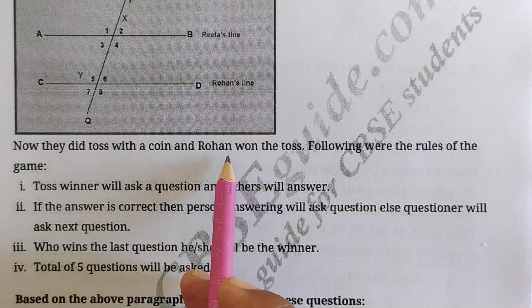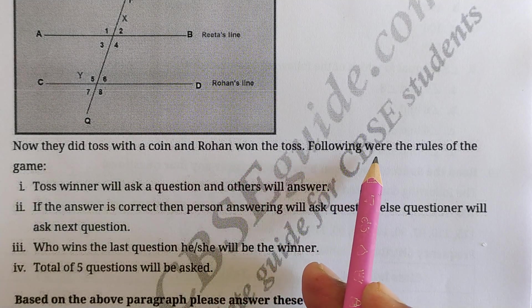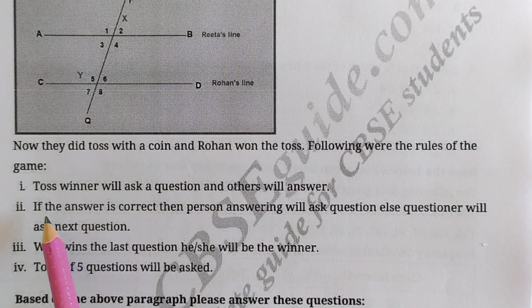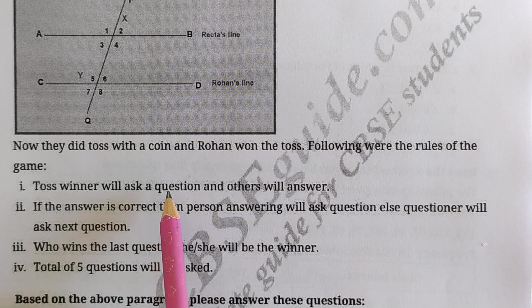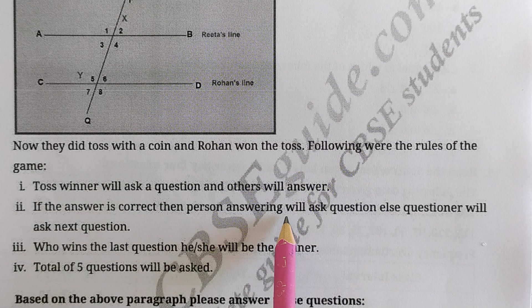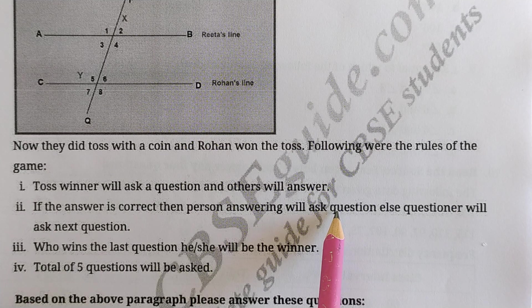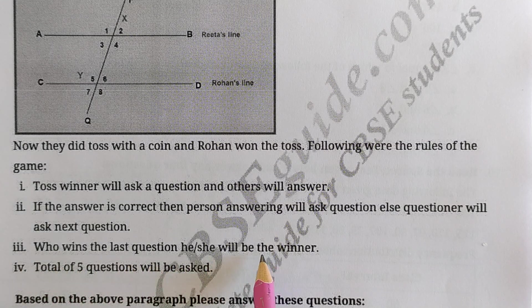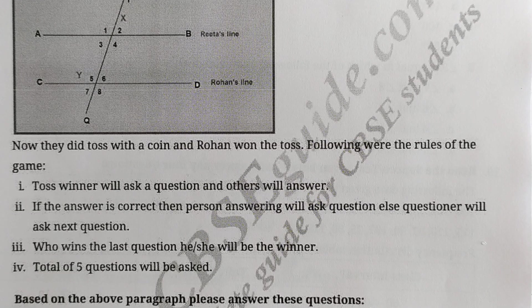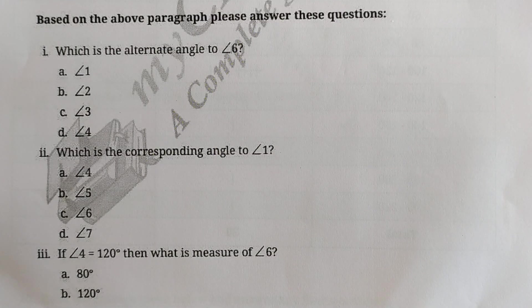They did a toss with a coin and Rohan won the toss. Following the rules of the game: rule one — the toss winner will ask a question and the other will answer. If the answer is correct, the person who answered will ask the next question. If the answer is incorrect, the questioner will ask the next question. Now let's see what questions are asked.